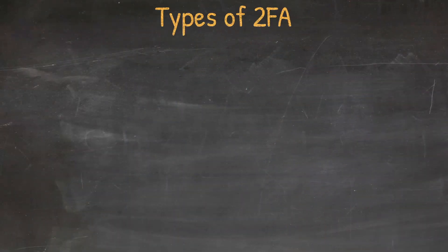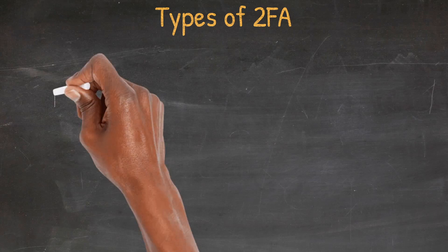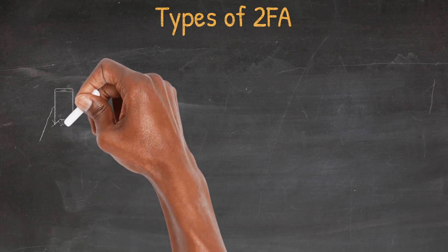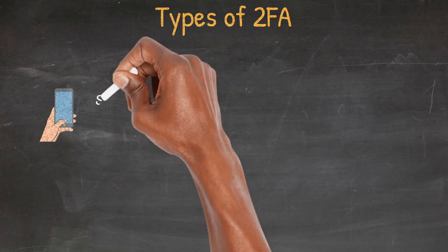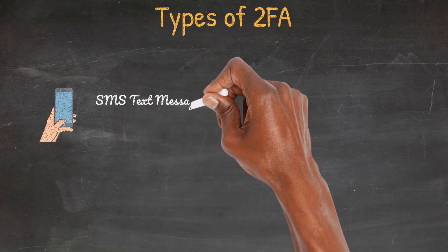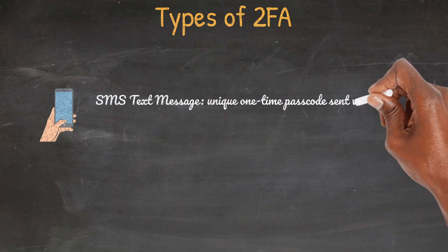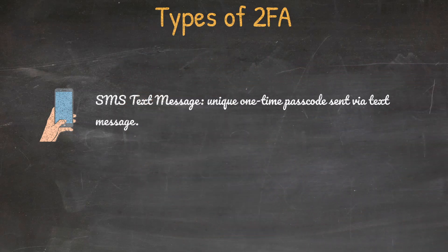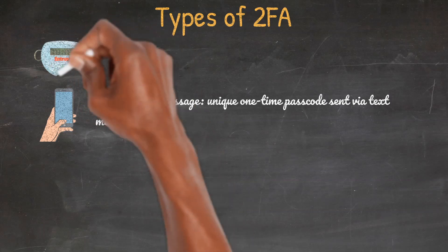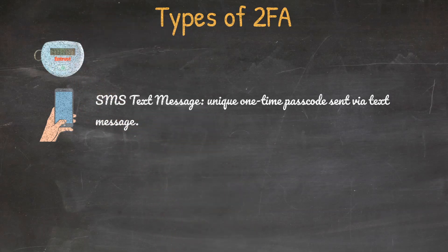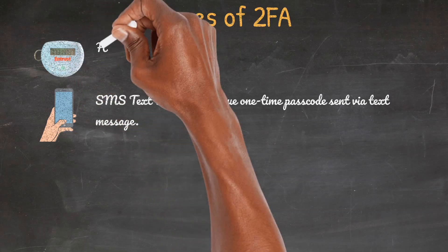Types of 2FA. SMS or text-based message 2FA: when a user tries to access an account, the application sends the user a unique one-time passcode via text message on their phone. The user then enters this passcode back into the application before gaining access. Hardware tokens: these are small peripheral devices that resemble a keychain fob.